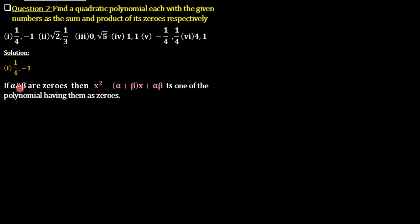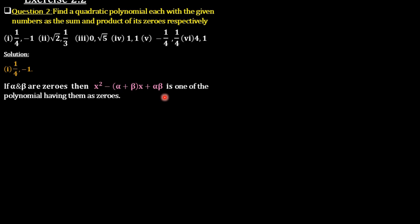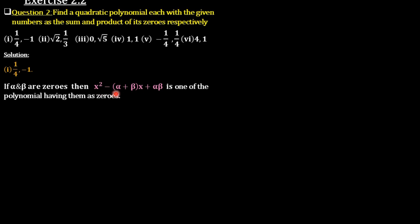So if alpha and beta are zeros, our quadratic polynomial will be of the form x² minus (sum of zeros)·x plus (product of zeros). Here, sum of zeros equals 1/4 and product of zeros equals negative 1, so alpha plus beta equals 1/4 and alpha·beta equals negative 1.